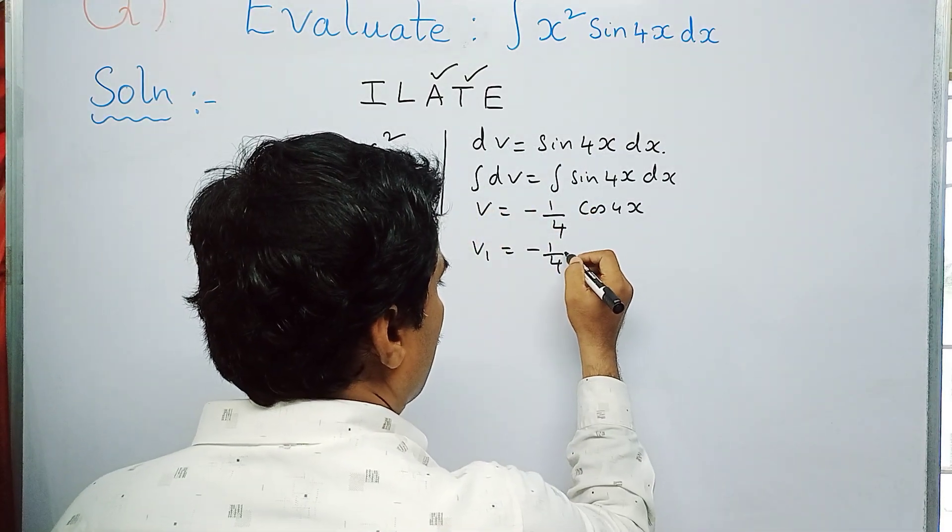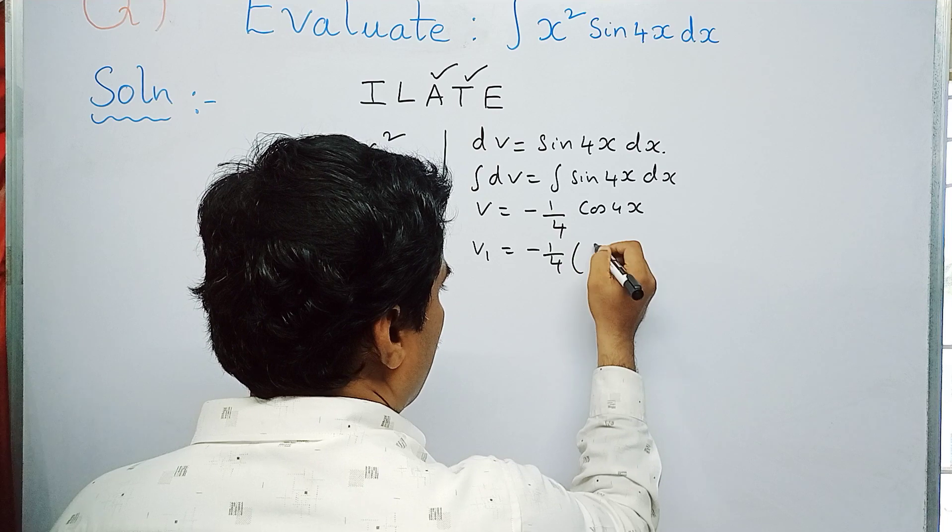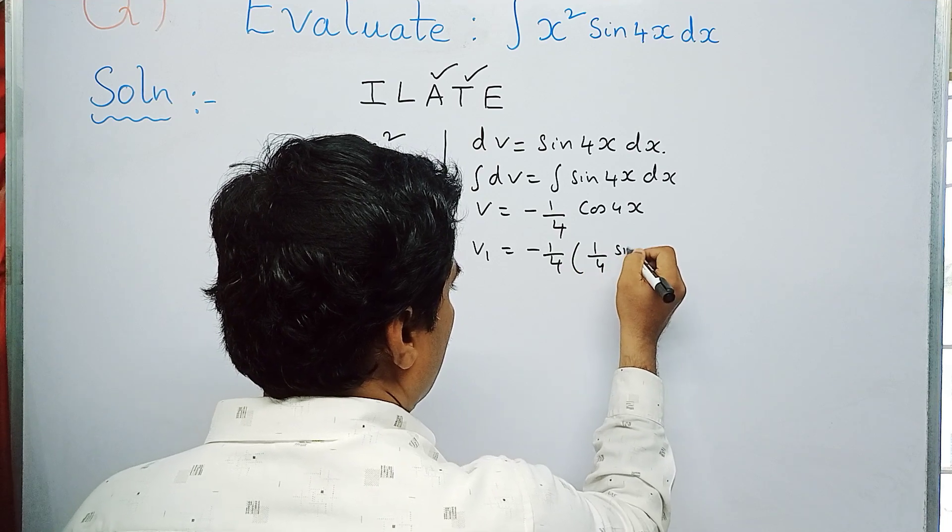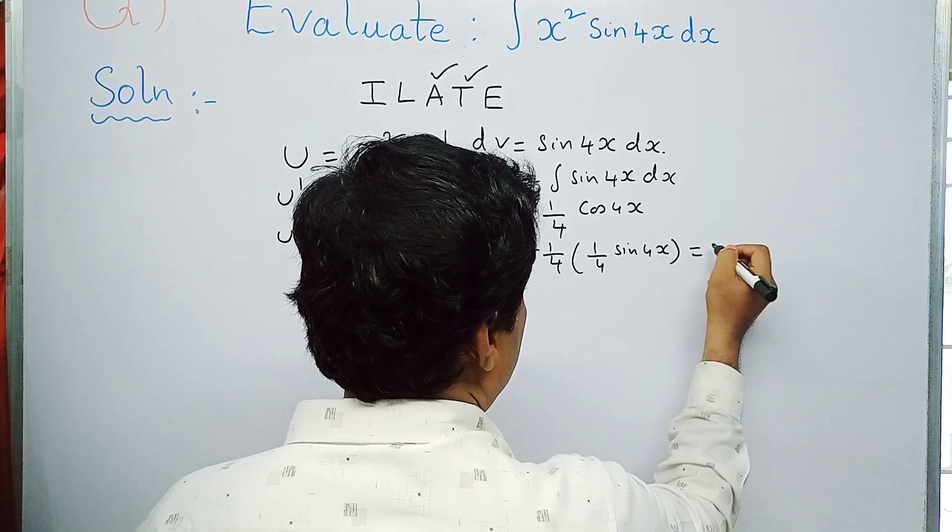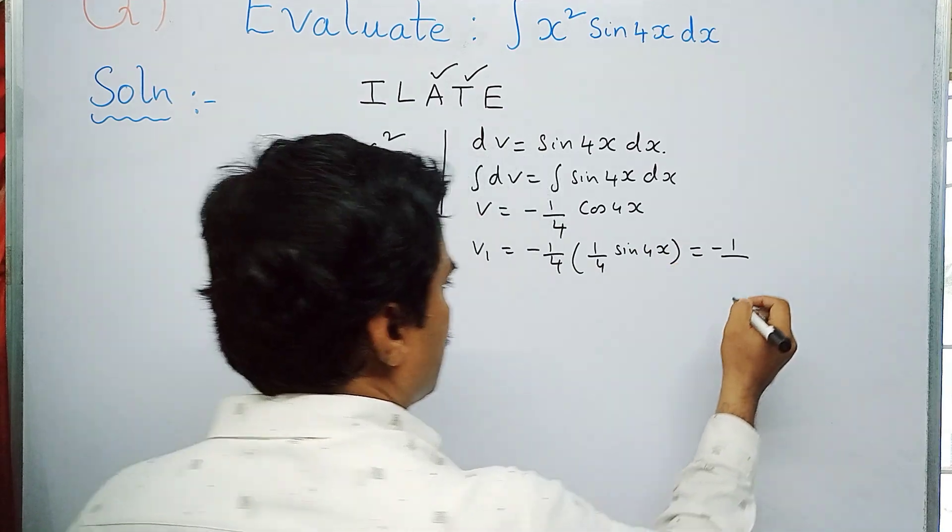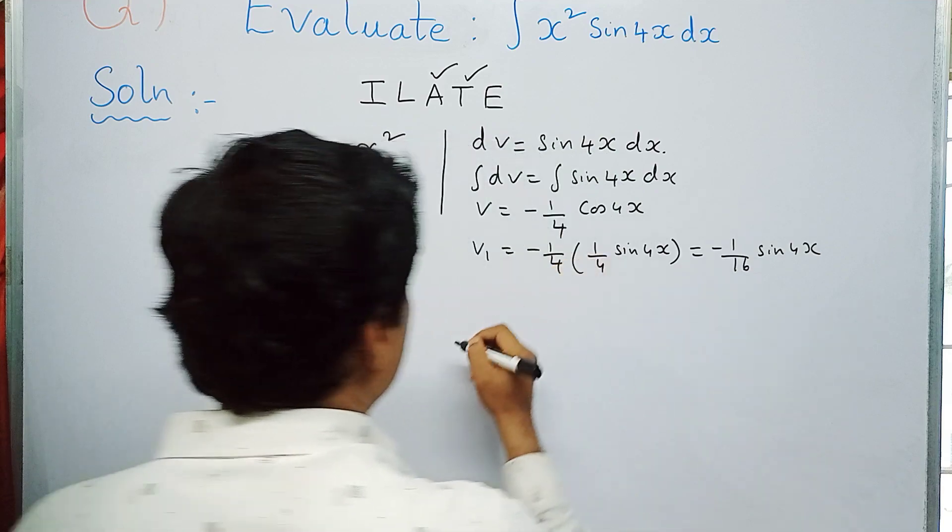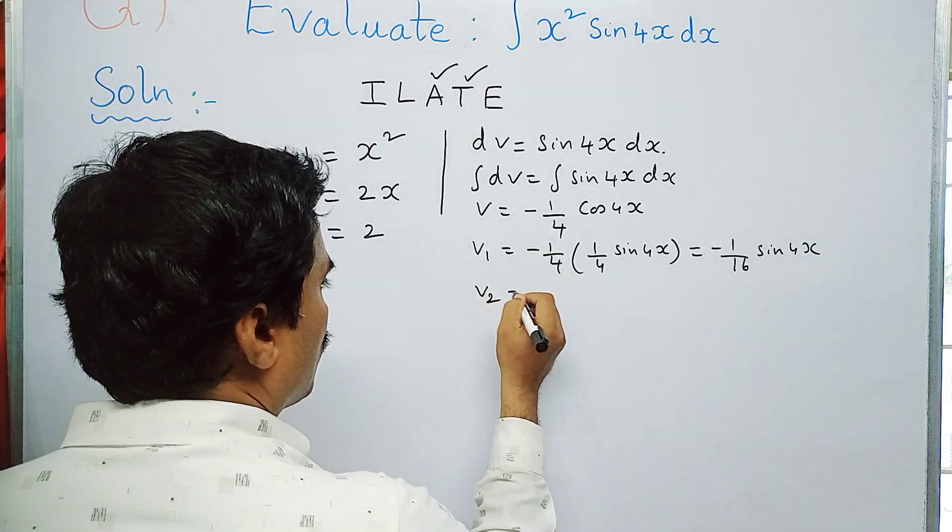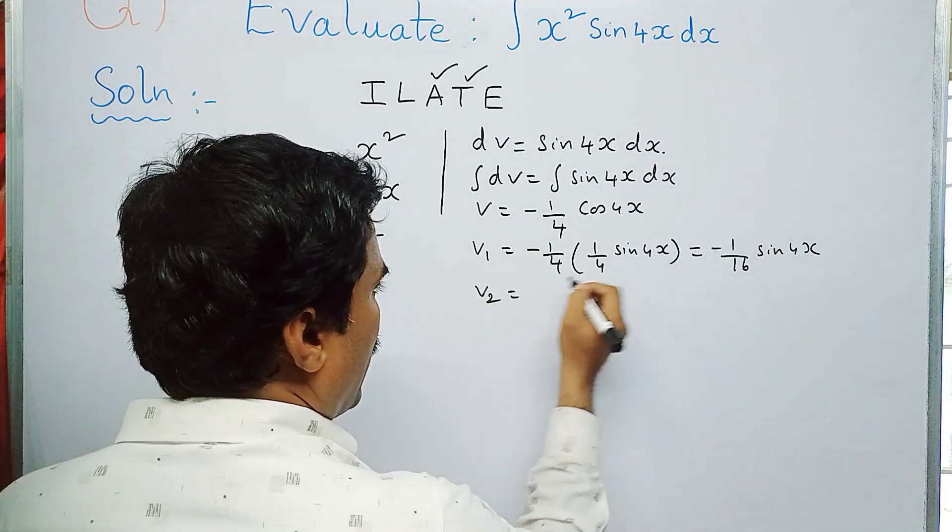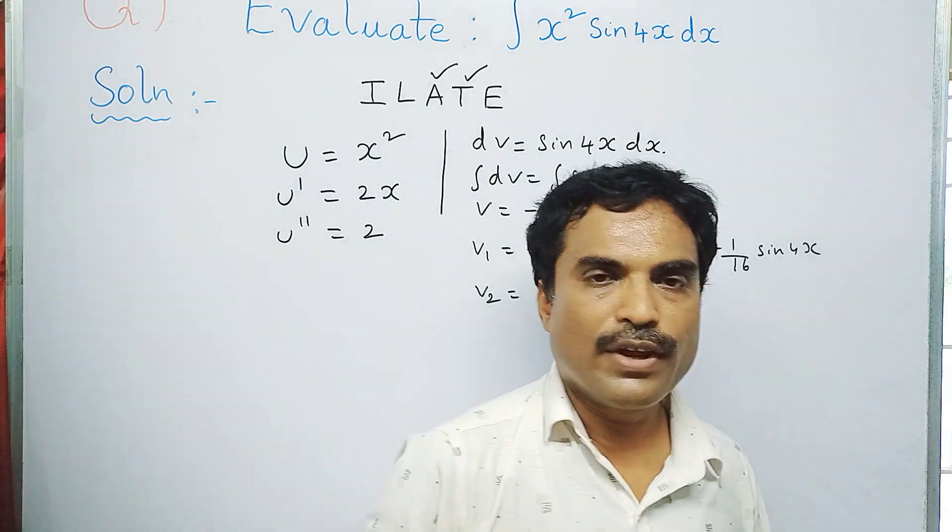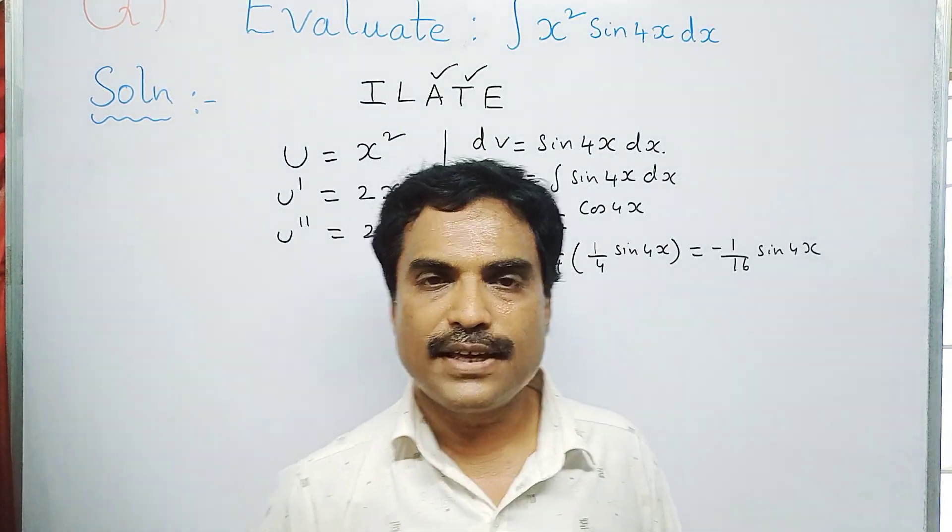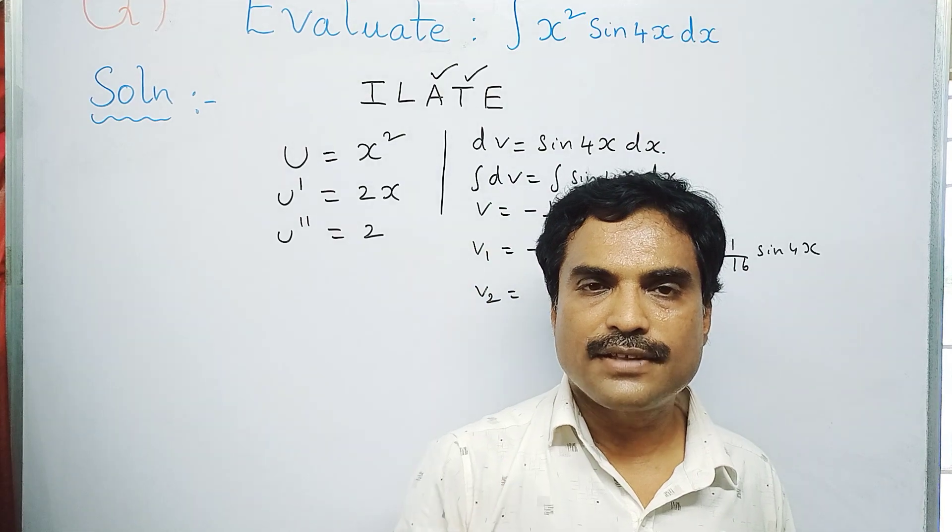So 1 by 4 times 1 by 4 sin 4x, which simplifies to minus 1 by 16 sin 4x.